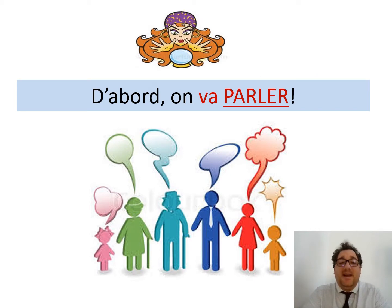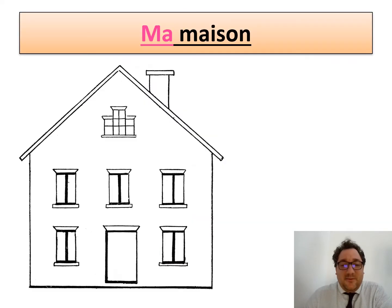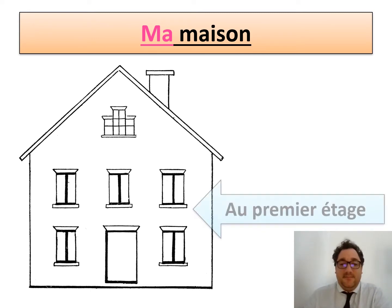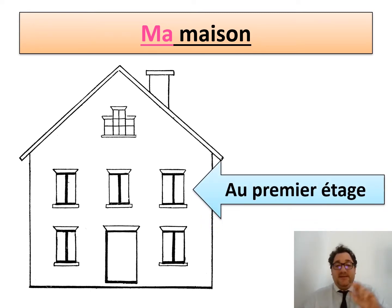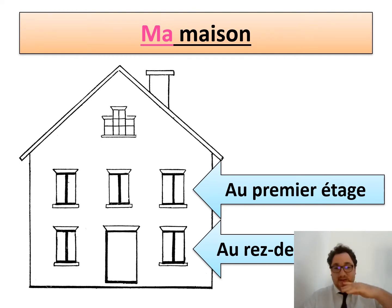Now we're going to talk, so I need you to put your pens down and repeat after me. This is new vocabulary — repeat it out loud. Don't be worried about it; it's extremely important that you follow this. Alors, voilà ma maison. C'est ma maison. Il y a deux étages. Voici le premier étage et voici le rez-de-chaussée — the ground floor and the first floor.